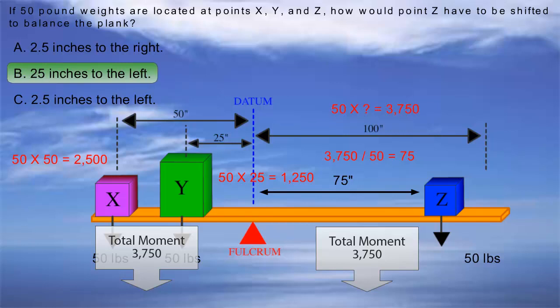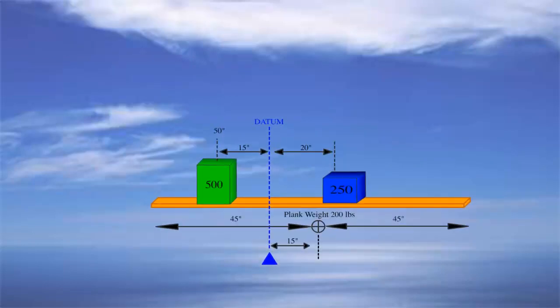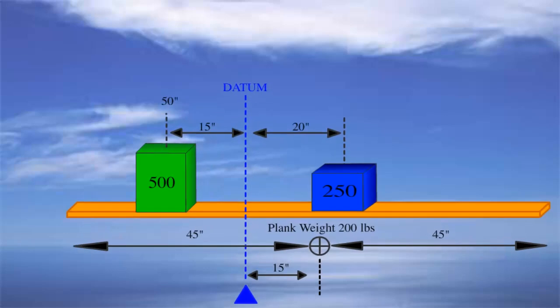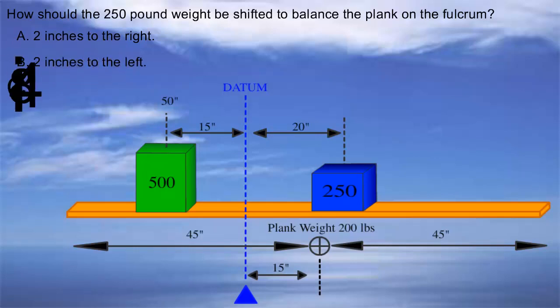Now let's take a look at a different figure. The other figure of interest is figure 61 of the private supplement book and 34 of the ATP supplement book. This question and figure might seem a little more confusing, but in reality, the system to answer it is exactly the same as the one we just used. The question says, how should the 250 lb weight be shifted to balance the plank on the fulcrum? The answers are 2 inches to the right, 2 inches to the left, and 8.4 inches to the right.